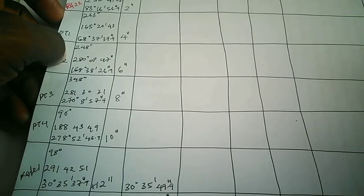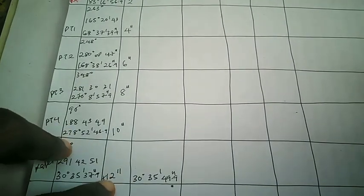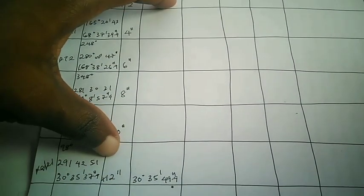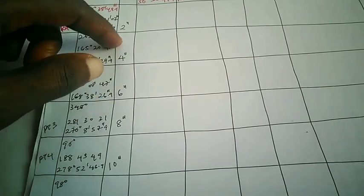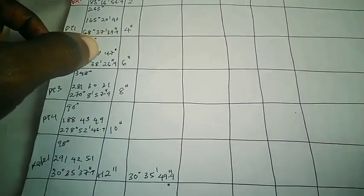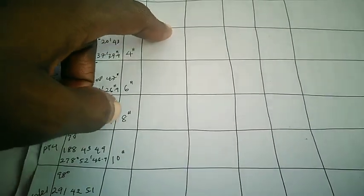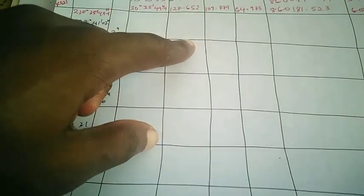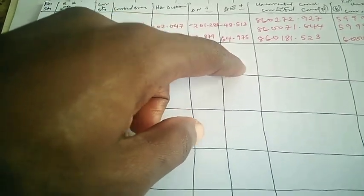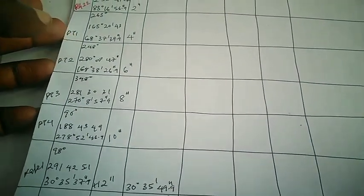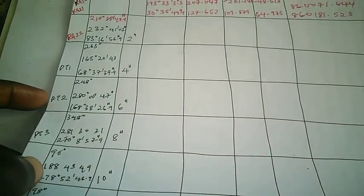On our last video, which you can find on the channel, we computed that we have a misclosure of around 12 seconds on this particular traverse we've been working on. And we were able to distribute it along the traverse stations or the traverse points. Today, we are going to apply this correction to our forward bearings to get our corrected bearing. Then we have our horizontal distance, which we'll later use to compute for our partial coordinates of delta north and delta east.